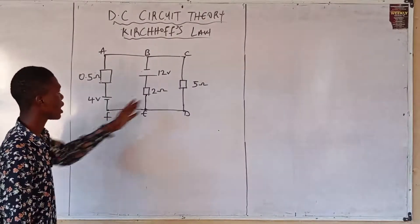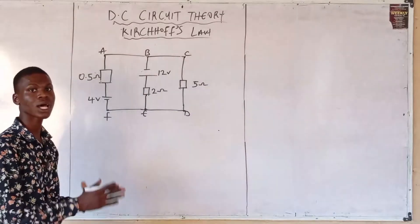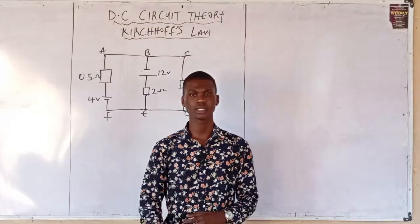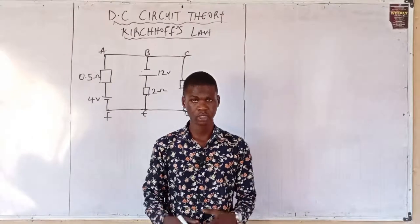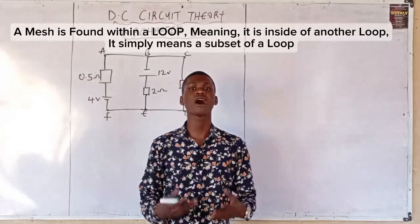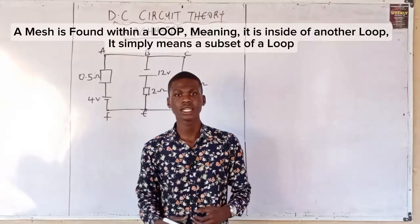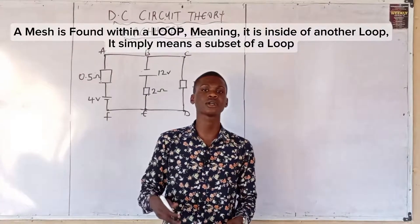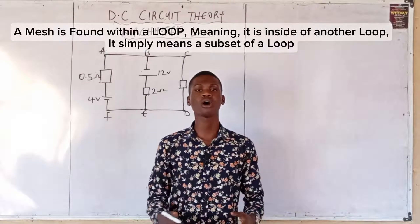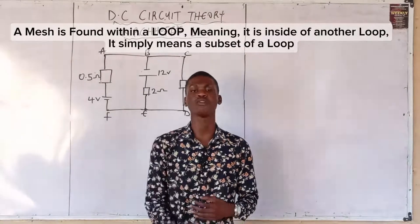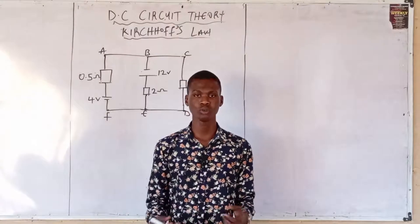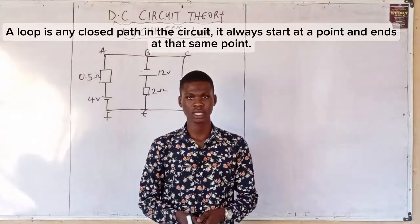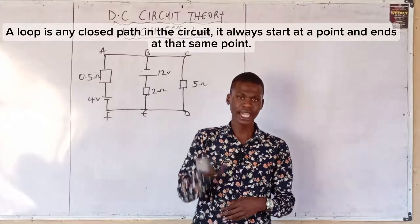A mesh is found within another loop, meaning it is present within another loop. It is inside of another loop, or you see that a mesh is a subset of a loop. What then is a loop? A loop is any closed part in a circuit starting from a point and it ends at that same point.